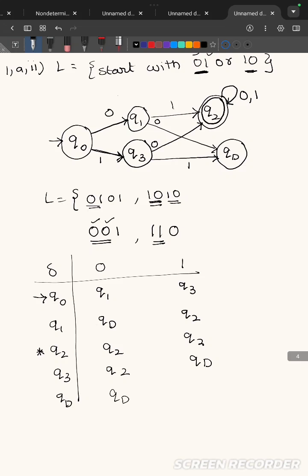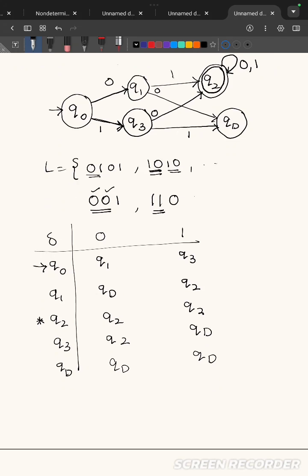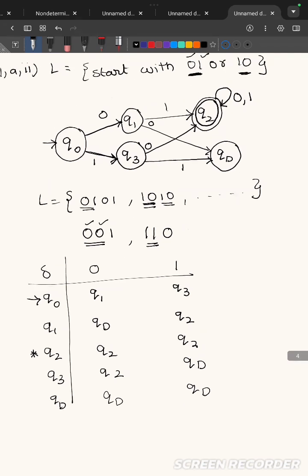q3 on 0 goes to final state and on 1 goes to the dead state. Dead state will remain in the dead state only. So this is the DFA diagram and the transition table with the sample strings which will be accepted by the DFA and which should not be accepted by your DFA.